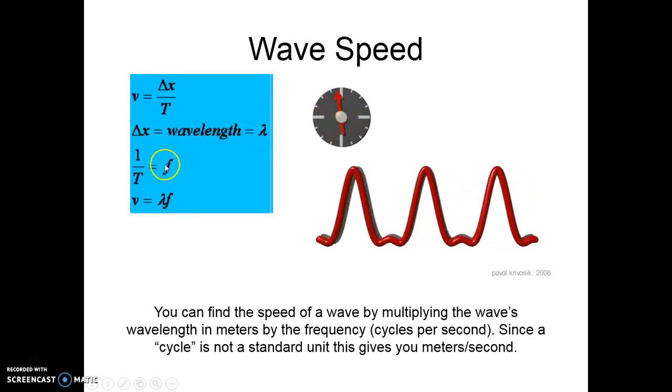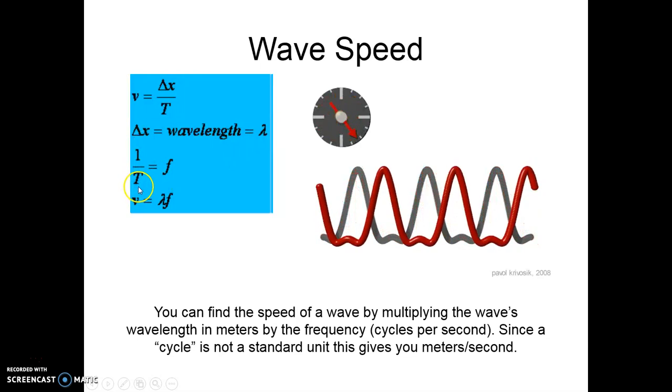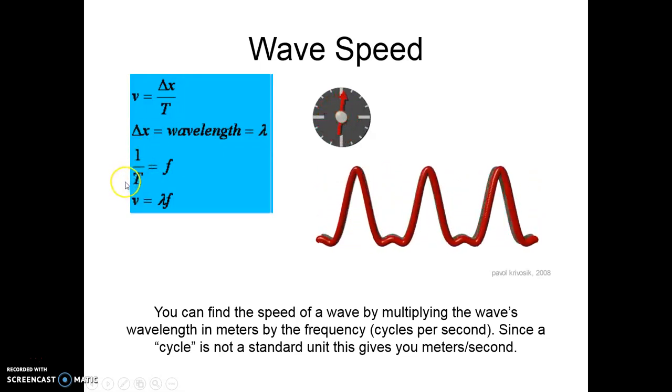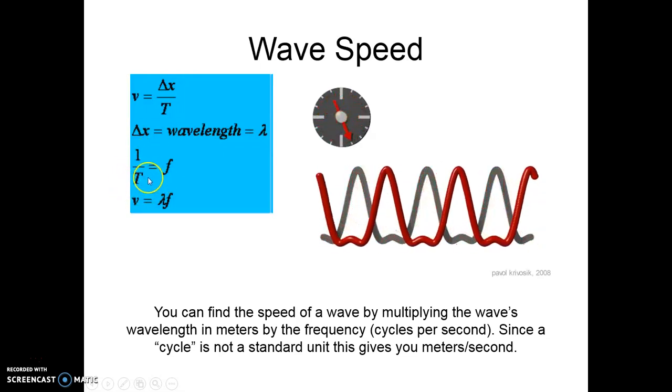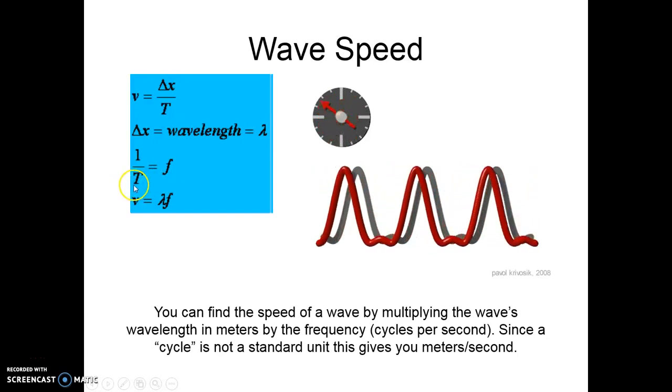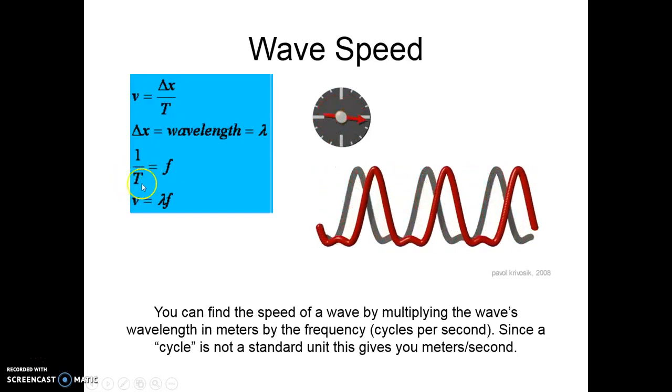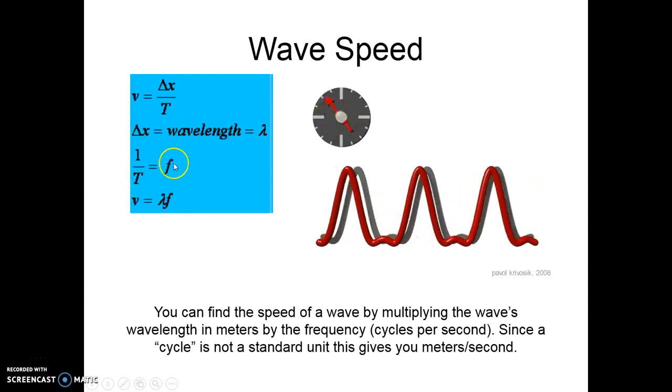And then my frequency, this is just 1 over my period. So it's just a reciprocal of my period. And usually, again, capital T, we did this before, this is my period, this is the time that it takes to do one cycle. But that's going to be our rate of also calculating my frequency.